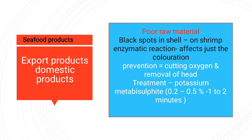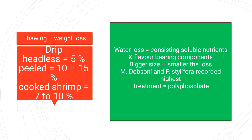Because black spots are caused by enzymatic reactions, we can also use a treatment with potassium metabisulphate at 0.2 to 0.5 percent concentration for one to two minutes. This is the prevention method for black spot formation in shrimp.